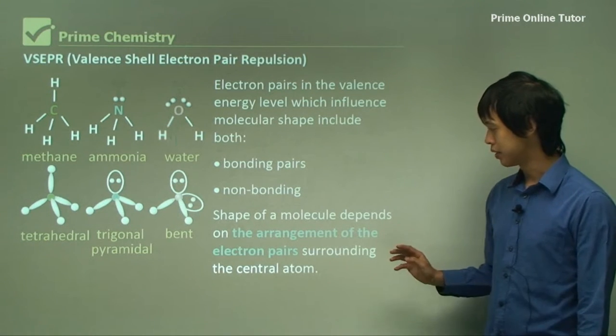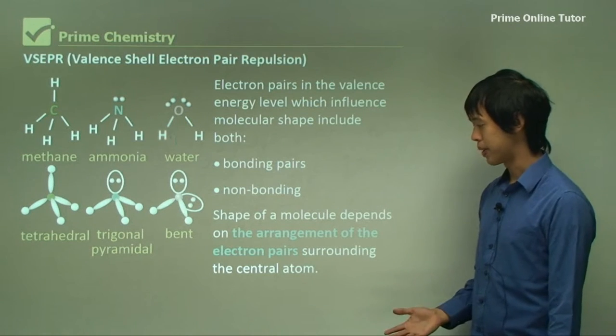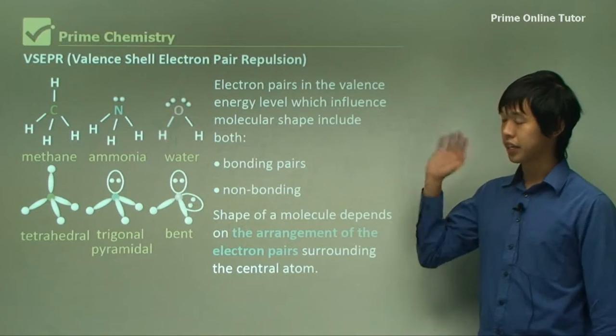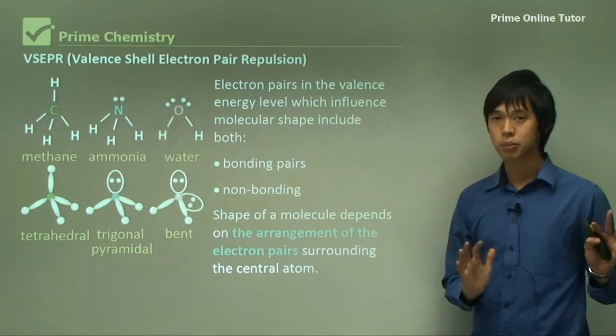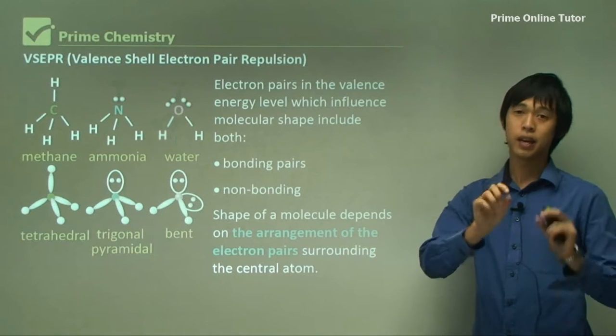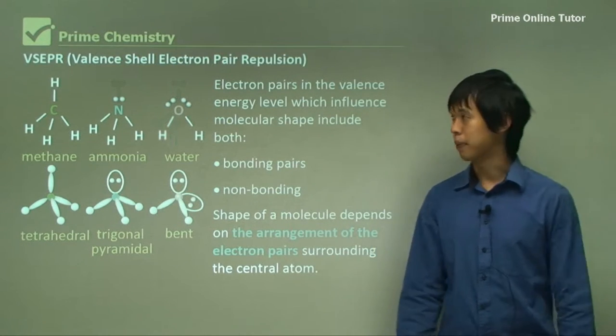And the shape of a molecule depends on the arrangement of the electron pairs surrounding the central atom. So if you look in the diagram, you can get different shapes just by having different placements of the lone pairs and bonding pairs.